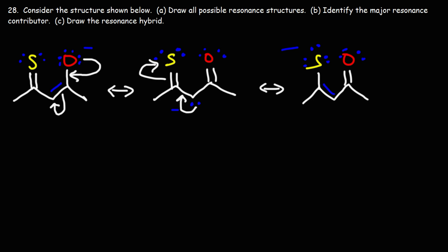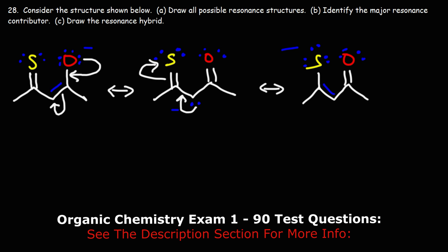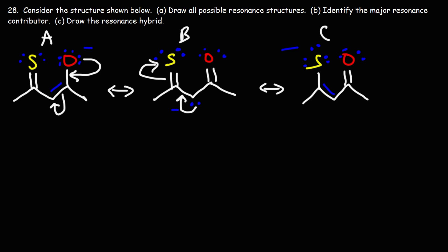Now let's move on to part B: identify the major resonance contributor. So which of these three resonance structures is most stable? Is it structure A, structure B, or structure C? Is it better to put the negative charge on the oxygen atom, the carbon atom, or the sulfur atom?